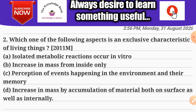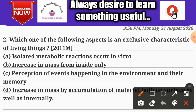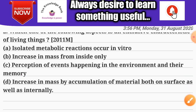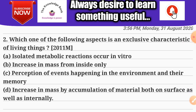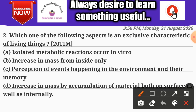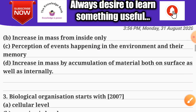Question number two: which of the following is an exclusive characteristic of living organisms? Options: A) isolated metabolic reactions occur in vitro; B) increase in mass from inside only; C) perception of events happening in the environment; D) increase in mass by accumulation of material both on surface as well as internally. Option C is the correct exclusive characteristic of living things.